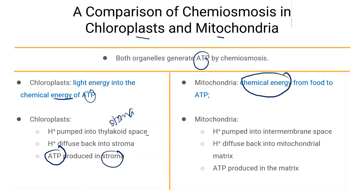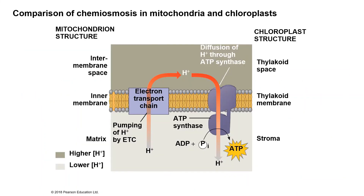In mitochondria, protons are pumped into the intermembrane space from the mitochondrial matrix, then diffuse back into the matrix through ATP synthase. The energy released is used to produce ATP in the matrix. This comparison covers both the similarities and differences in terms of energy form and spatial organization of chemiosmosis in chloroplasts versus mitochondria.